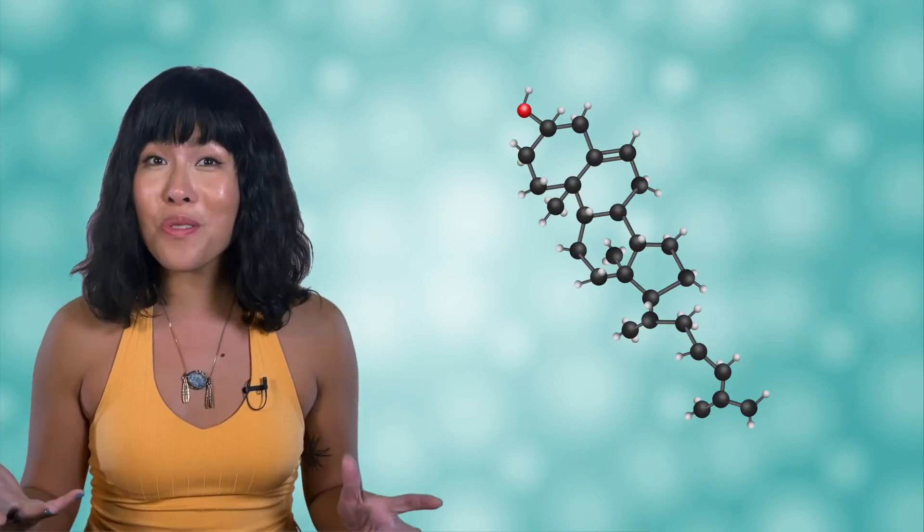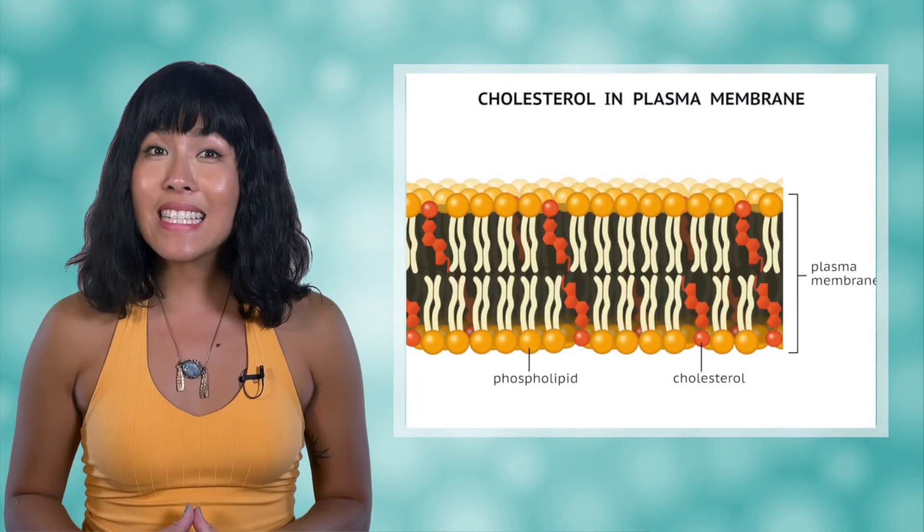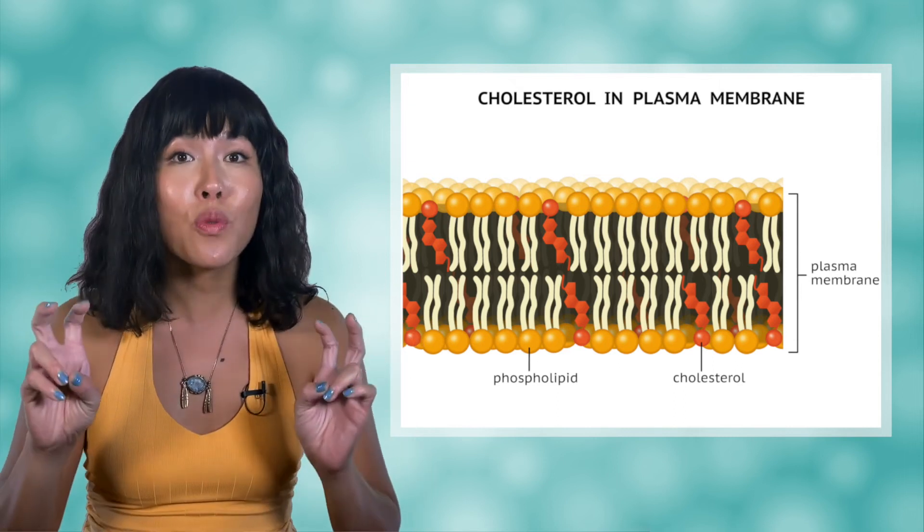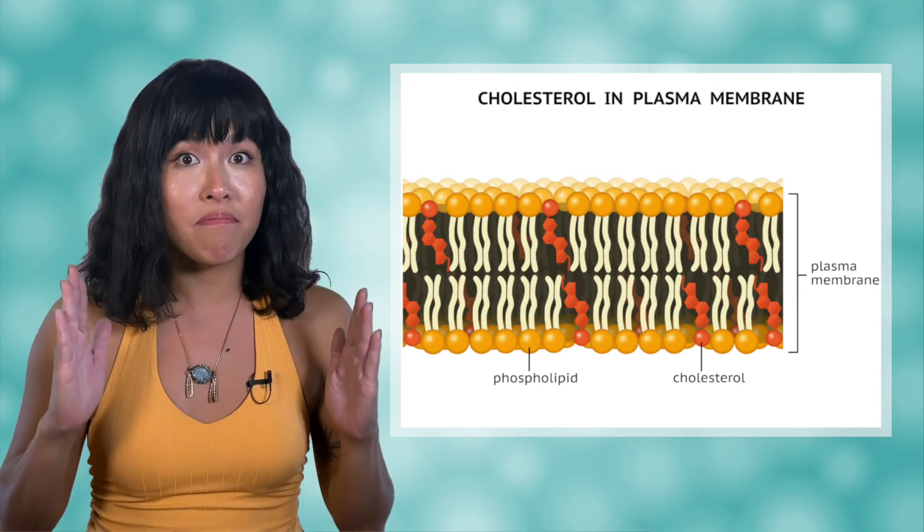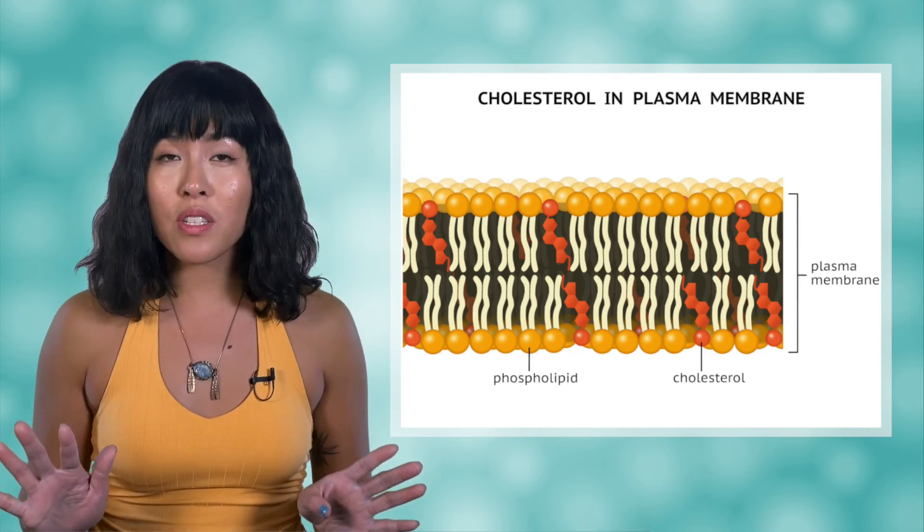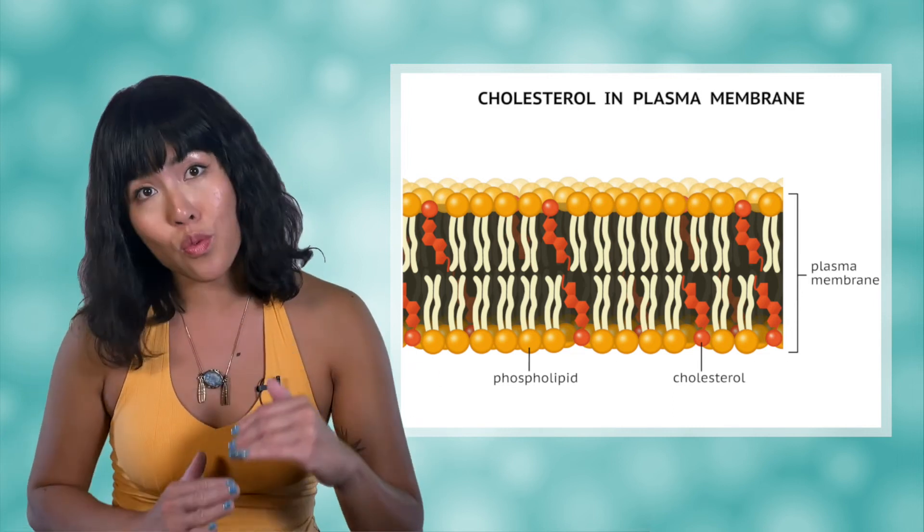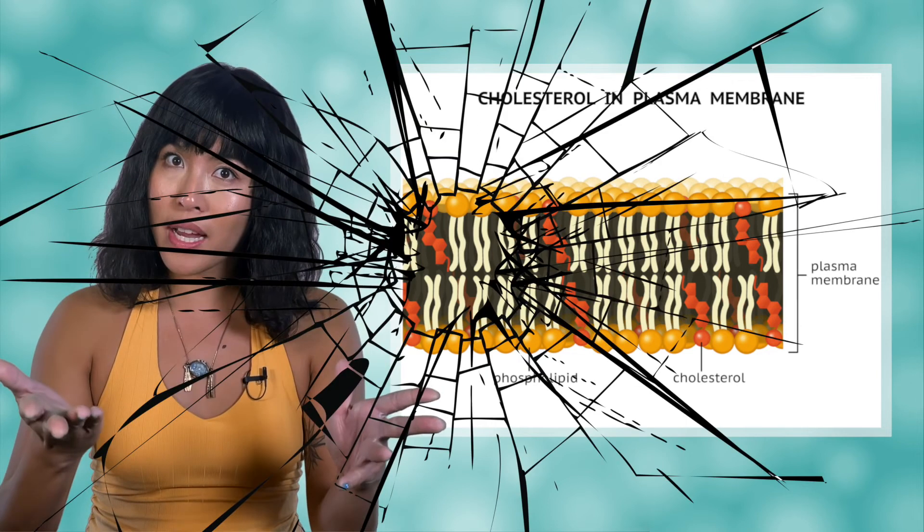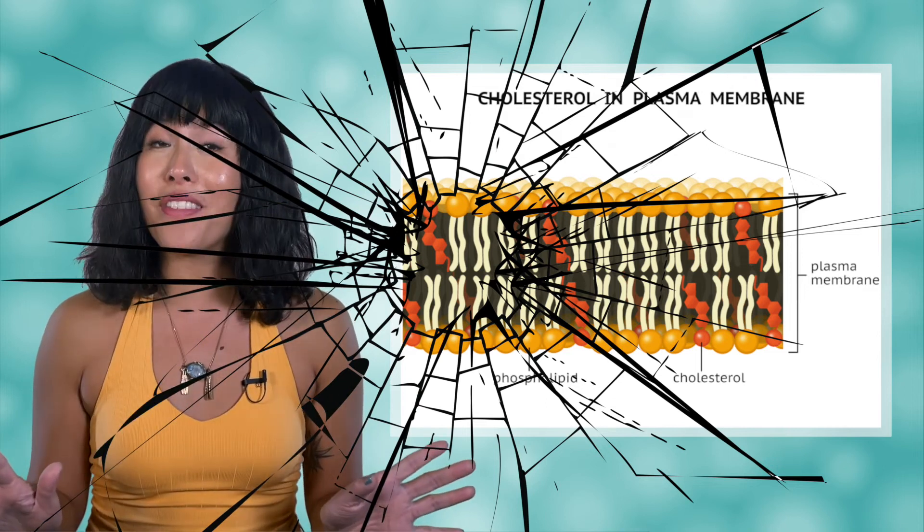Proteins are not the only molecules you'll find embedded in the membrane. You'll also see many cholesterol molecules, another type of lipid that you learned about in a previous lesson, mixed in with phospholipids. These help the membrane stay flexible. Remember that it is a fluid mosaic, not rigid. Without the cholesterol molecules, the membrane would not be able to bend as well. Things that can't bend tend to break instead, and we definitely don't want that.